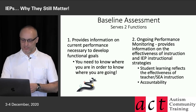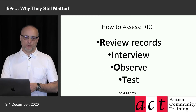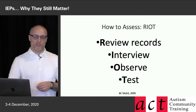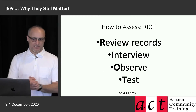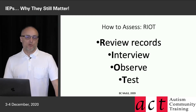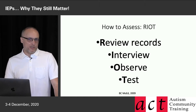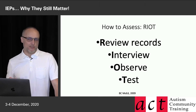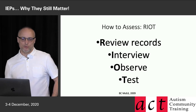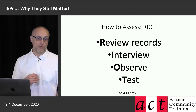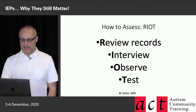So how do you get this baseline assessment? Here is your rule of thumb — it's the RIOT Act. You can review records, interview people, put eyes on it yourself through observation, or test it directly. I'll run you through each of these and give you some examples.